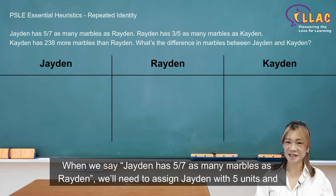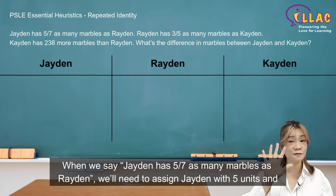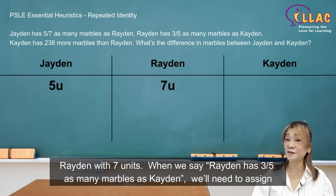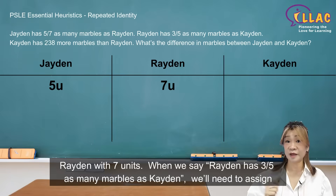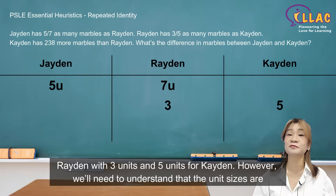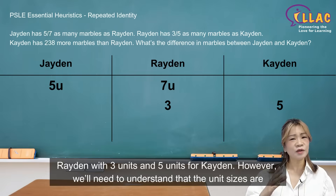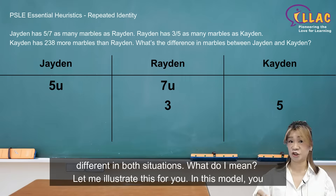When we say Jayden has 5 over 7 as many marbles as Raiden, we'll need to assign Jayden with 5 units and Raiden with 7 units. When we say Raiden has 3 over 5 as many marbles as Kayden, we'll need to assign Raiden with 3 units and 5 units for Kayden. However, we'll need to understand that the unit sizes are different in both situations.